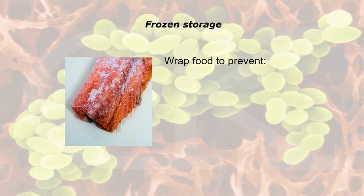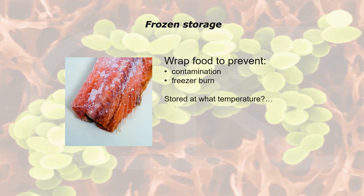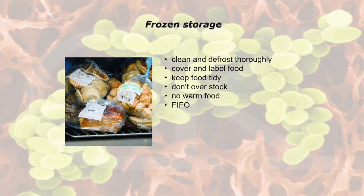For frozen storage, always wrap food in a freezer to prevent contamination and freezer burn. It must be stored at minus 18 degrees C. Always clean and defrost your freezers thoroughly, cover and label food, keep food tidy, don't overstock, don't put any warm food in. Always adhere to FIFO — first in, first out — a good method of stock control to ensure everything is used within date, with new stock going to the back and older stock coming forward.